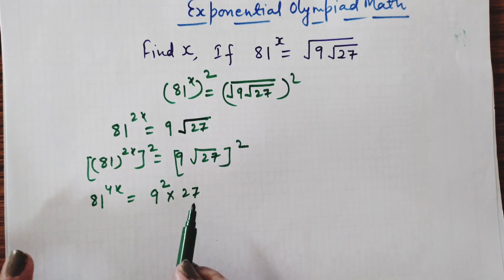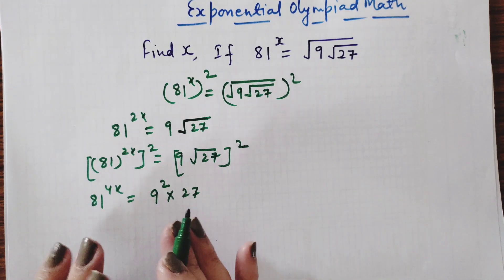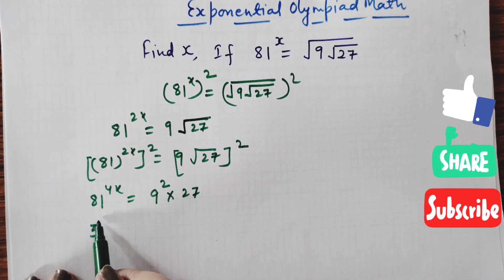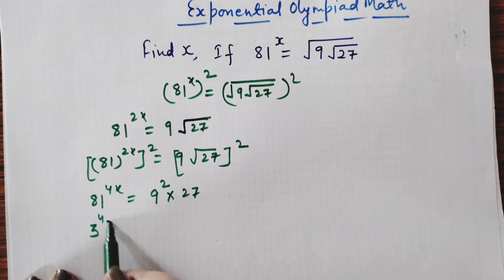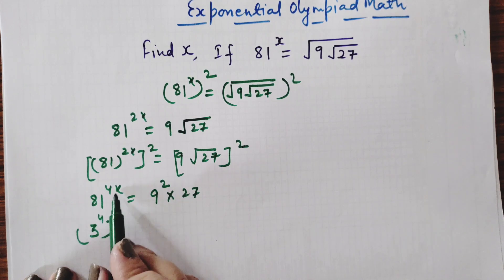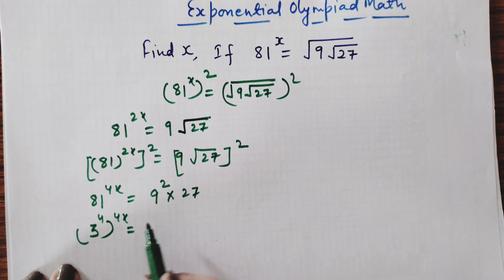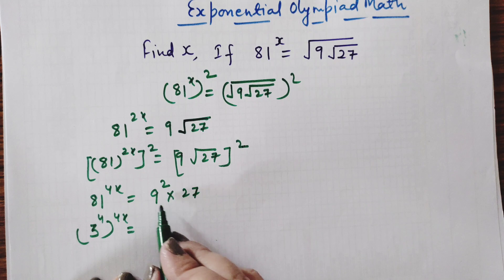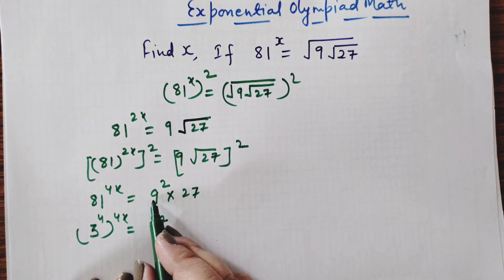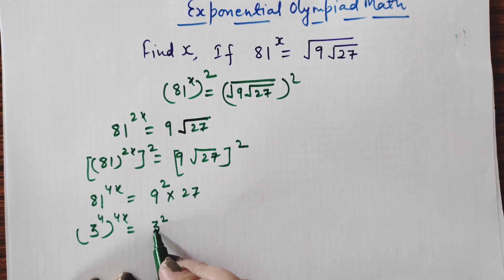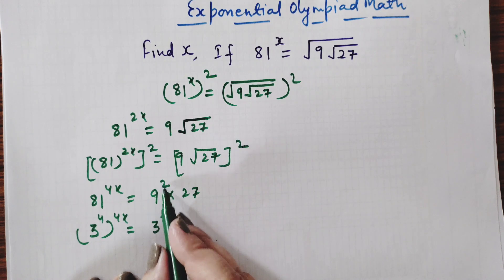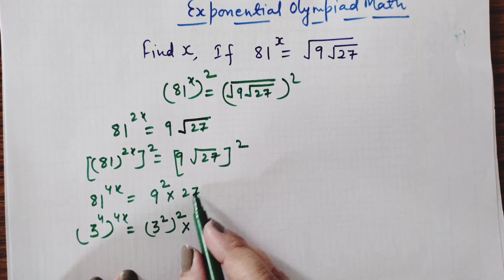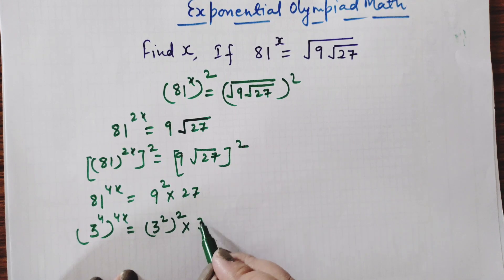Now we will convert both the left-hand side and right-hand side expressions in terms of base 3. Can we write 81 as 3 to the power 4? Yes — if you multiply 3 four times you get 81. So we write 3 raised to the power 4, whole power 4x. And on the right-hand side, 9 squared: can we write 9 as 3 squared? Yes. So instead of 9 we write 3 squared, and already there is a power. And for 27, can we write it as 3 cubed? Yes.